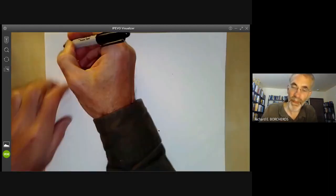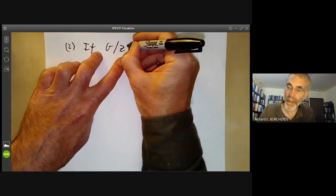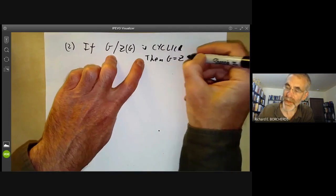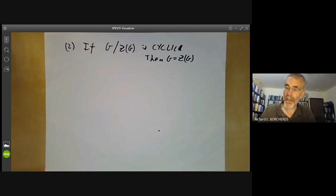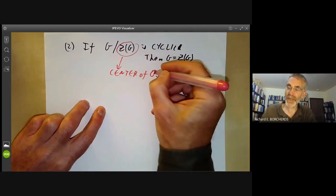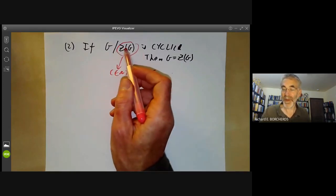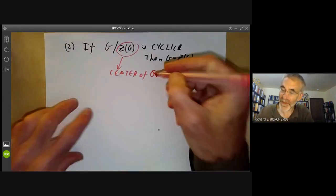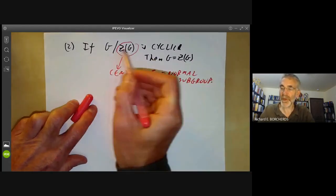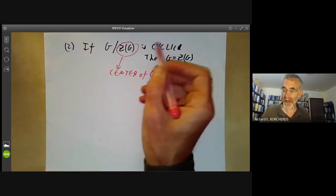The second result we need says that if G modulo the centre of G is cyclic, then G is equal to the centre of G. So this notation here just stands for the centre of G. And the centre of G is kind of obviously a normal subgroup because if we take G, H, G to the minus 1 for something, something in some element H in here, it's equal to H. So the centre of G is a normal subgroup. And since it's normal, we can form a quotient group. And what I'm saying is that this quotient group can only be cyclic if G is equal to its centre, in which case this group is trivial.